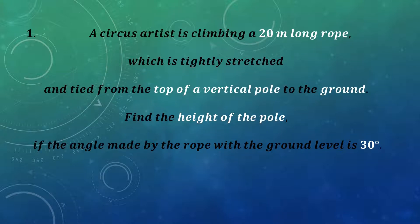I'll consider AB to be the pole. Let a point on the ground be C, so BC here is the ground level and AB is the pole. The rope is stretched between two points: the top of the pole which is A, and the point on the ground which is C. So my rope is AC which is 20 meters long.